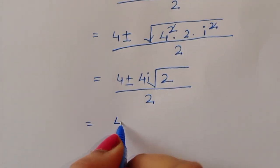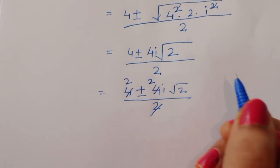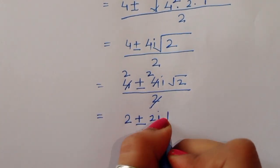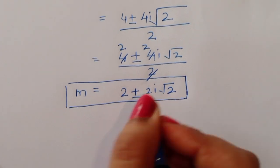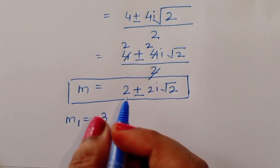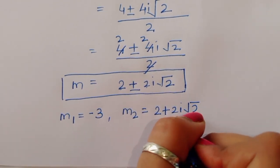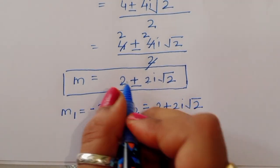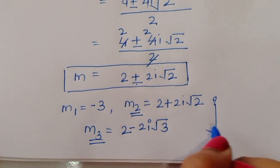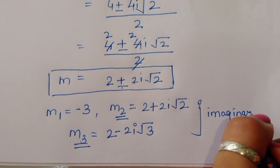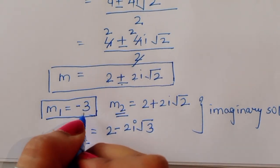So m equals 4 plus or minus 4i root 2, divided by 2, which simplifies to 2 plus or minus 2i root 2. Therefore m1 equals minus 3, m2 equals 2 plus 2i root 2, and m3 equals 2 minus 2i root 2. Since m2 and m3 are imaginary solutions, we have only one real solution: m equals minus 3.